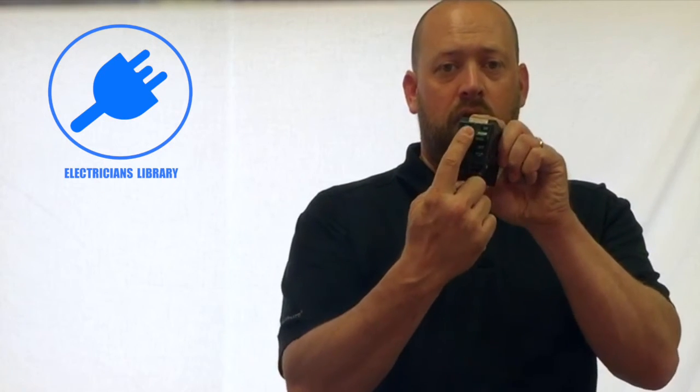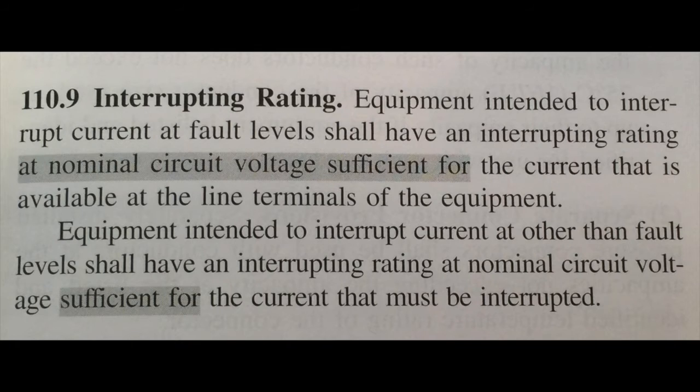In article 110.9 of the NEC, it states, equipment intended to interrupt current at fault levels shall have an interrupting rating at nominal circuit voltage sufficient for the current that is available at the line terminals of the equipment.